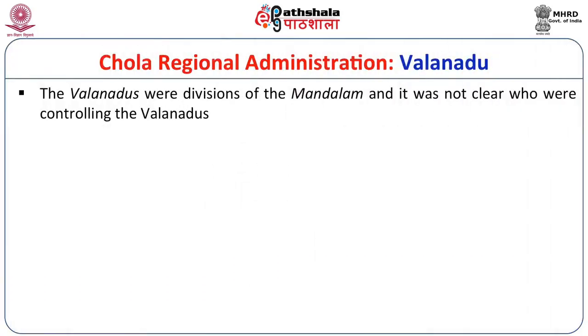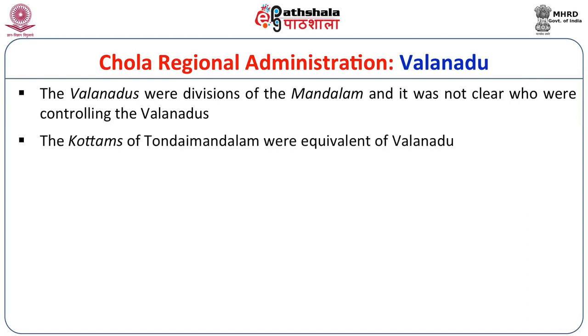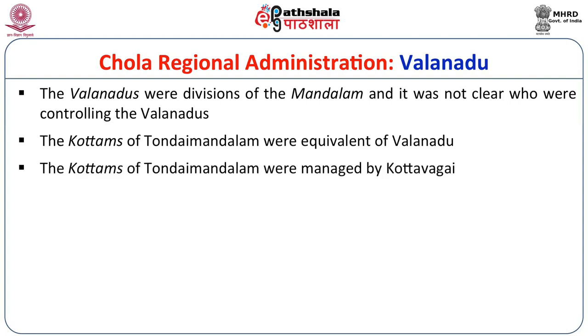Coming to regional administration, we have already discussed the Mandalam. We also have certain references to the Valanadu. The Valanadus were divisions under the Mandalams, though it is not clear who controlled them. The Kottams of the Tondai Mandalams were equivalent to Valanadu, and we have evidence for Kottavahai officers managing some of the Kottams. As far as Valanadu management is concerned, we do not have much evidence. Up to Valanadu, the territorial administration should probably be seen as part of the central administration, though central and local administration are very much interlinked, as we see in the case of Uttaramirur.